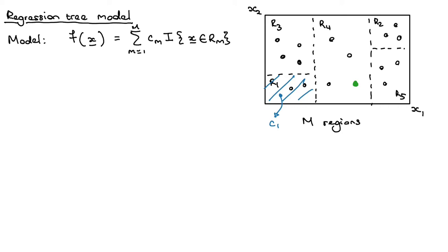When we start with decision trees, we just get the data — we don't know the regions and we don't know the C's. But if we were told the regions and the C's, we could get the output of the model. So how do we actually construct these regions and learn the different parameters? Like any machine learning algorithm, we need a metric for how well the model is performing — we need a loss that we will try to optimize.